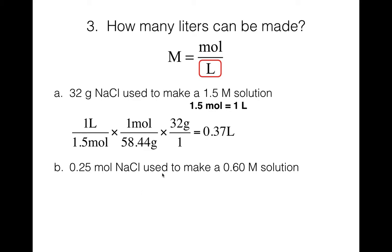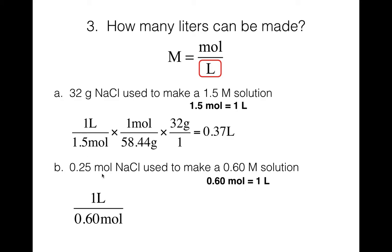For part B: 0.25 mol NaCl used to make a 0.60 molar solution. Break up that capital M: 0.60 mol equals one liter. Put the 1 liter on top and the 0.60 mol on the bottom. We want to end up with just liters, so we need to get rid of the mole. Put the 0.25 moles in the numerator so the moles cancel. Be careful when you type this into the calculator to divide the 0.60. Using 2 sig figs, the answer is 0.42 liters.